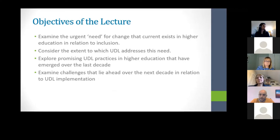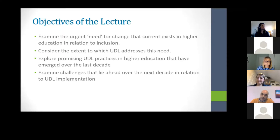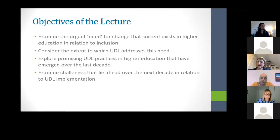A danger is that we often jump straight into solutions without taking time to look at the need. Many of you are advocates for inclusion, and I'd like you to think that before approaching faculty and trying to convince them of a new framework, you need to acknowledge that things are not working — because that's the biggest motivator. Once people realize they can no longer carry on the way they're doing things, that opens the appetite for new solutions. Then I'll introduce UDL, look at successes over the last decade, and finish with challenges still ahead.